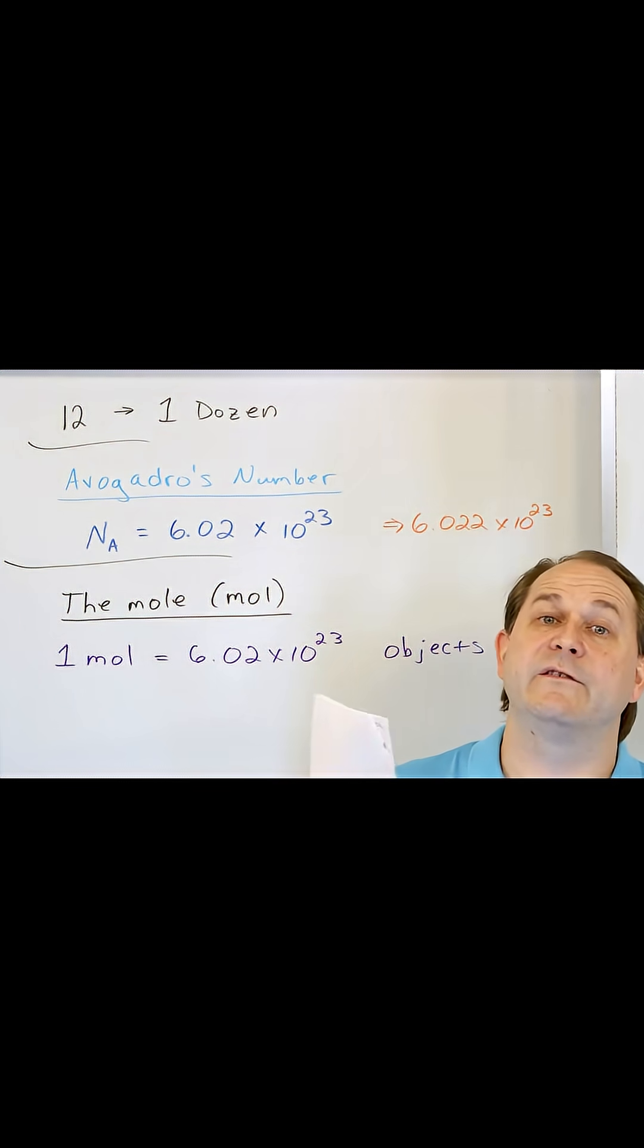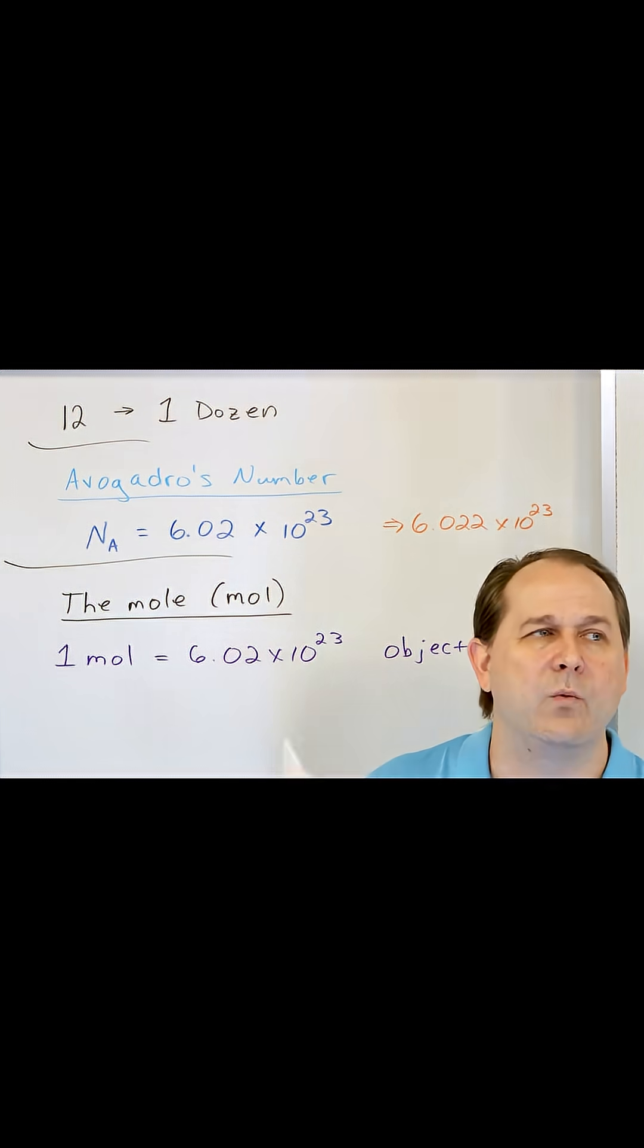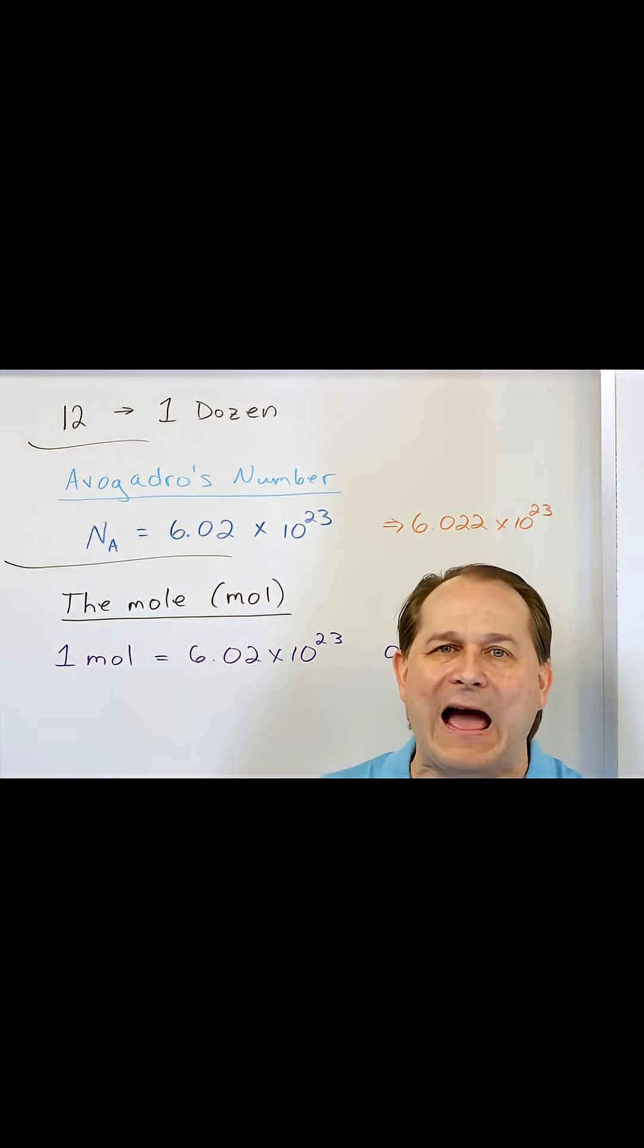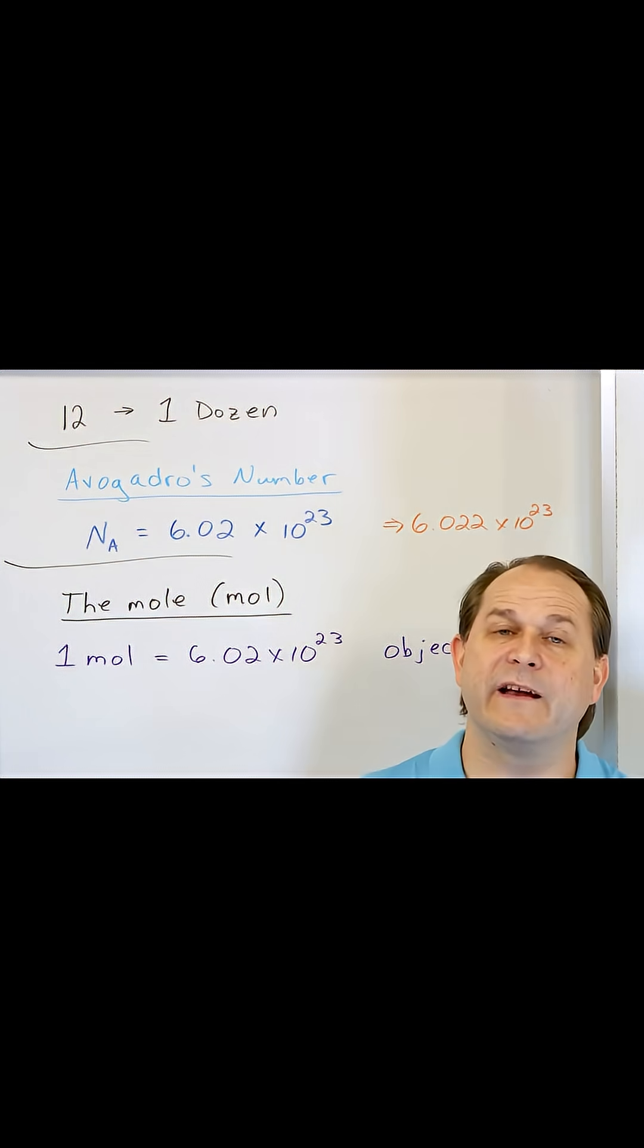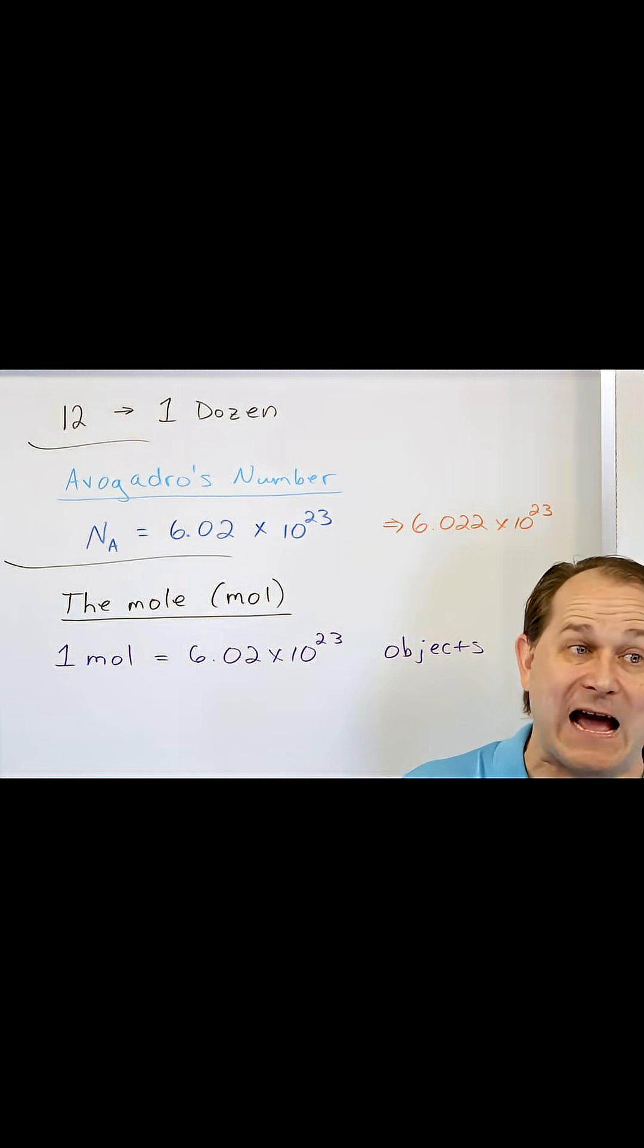6.02 times 10 to the 23rd, what? Well, it depends on what you're talking about. If it's just atoms of lead, then it's 6.02 times 10 to the 23rd atoms of lead. That's how many atoms are there.